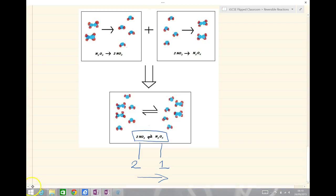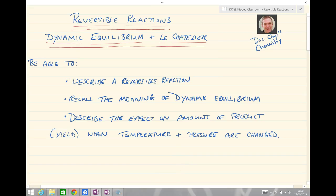And there we have it, we have a quick recap of those things that we've seen in today's lesson. So today we've seen reversible reactions, dynamic equilibrium, and Le Châtelier's principle, which is where we look at the shifting in equilibrium. And by the end of today you should be able to describe the reversible reaction, recall the meaning of dynamic equilibrium, and describe the effect on amount of product when the temperature and pressure are changed. See you soon next time.